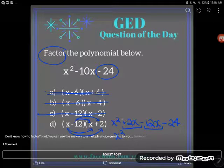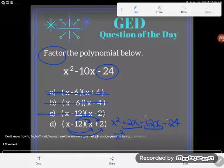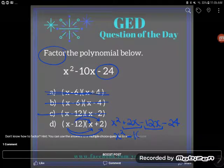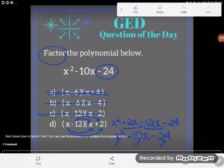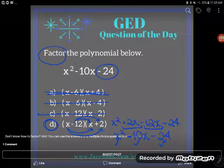So nothing will happen with my first term, but positive 2x minus 12x will give me negative 10x—ooh, that looks good! And then of course I have that negative 24. And take a look at that: all three terms match the expression above. It must be D. Wonderful!